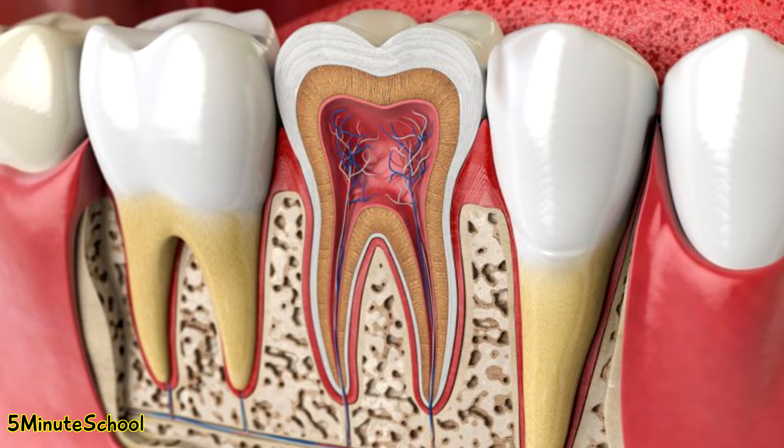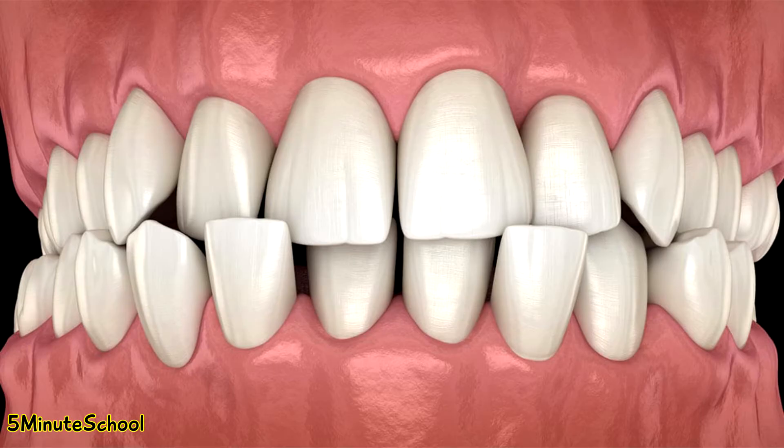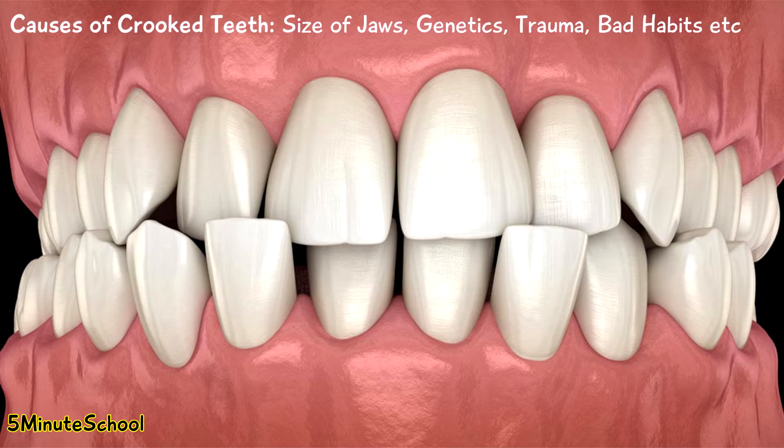The teeth are supported by the bone, but sometimes they can grow and erupt in the mouth in the wrong positions. There are a large number of reasons for that, whether it's due to genetics, the size of your jaw bones meaning there's too much or too little space, trauma, or bad habits during childhood which change the structure of your jaw.